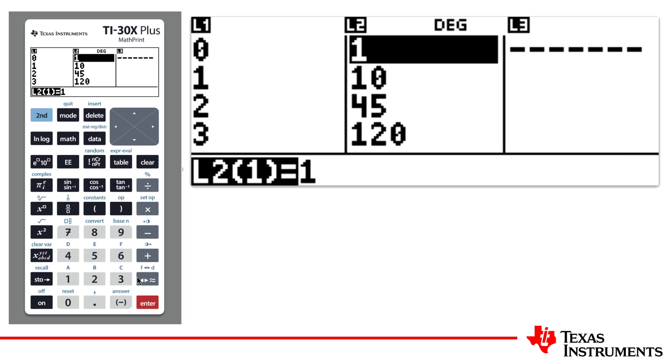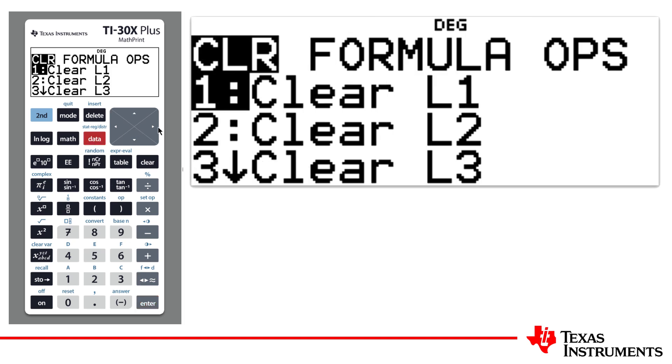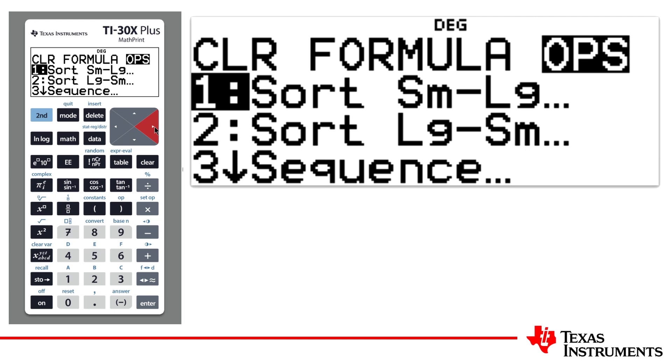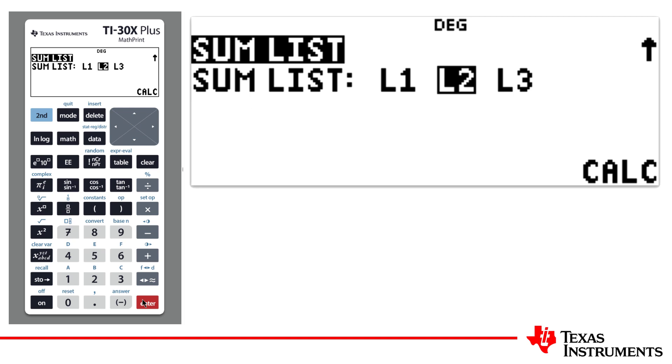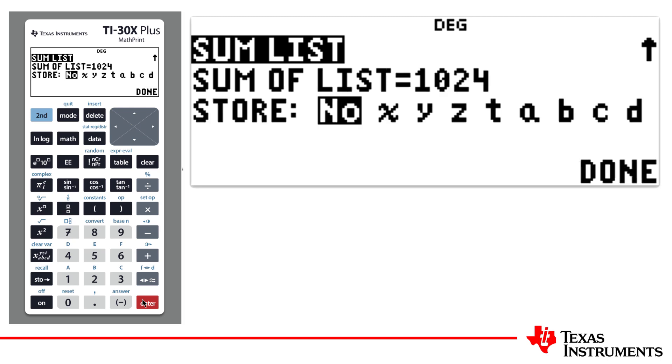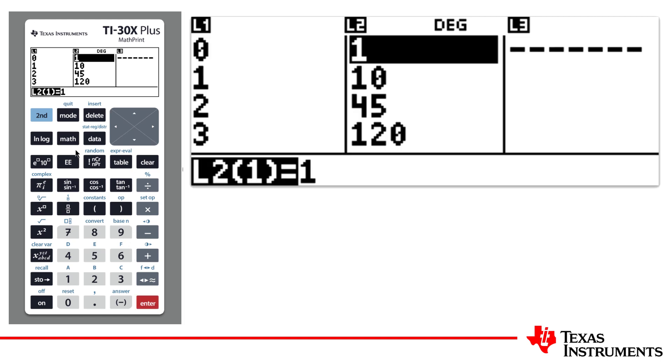We wanted to calculate the sum of the coefficients. So, we can use the data key to access Operations, navigate down to Sum List, and select List 2. So, the answer is 1024. That is, 1 plus 10 plus 45 plus 120 and so on gives me 1024.